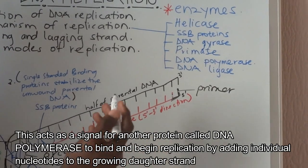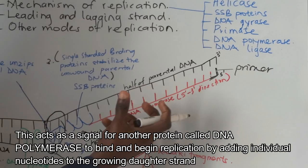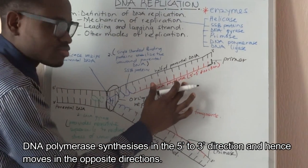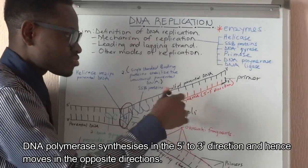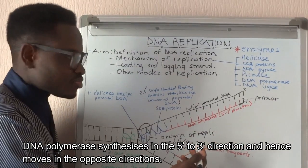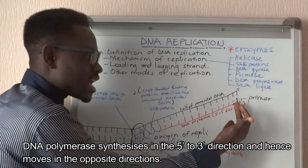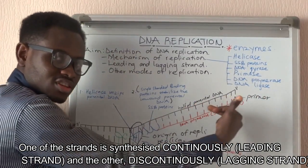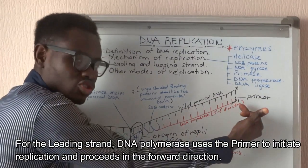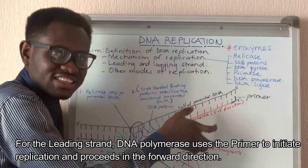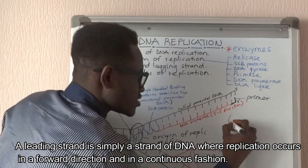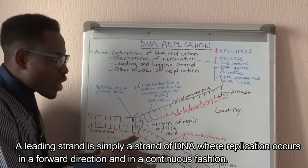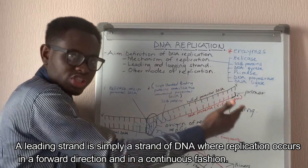DNA polymerase comes in to add the other nucleotides to complete replication. DNA polymerase moves in the 5' to 3' direction, synthesizing from that direction onward. Because it moves in the forward direction continuously, this strand is called the leading strand — the strand of DNA where replication takes place in a forward direction and in a continuous fashion.